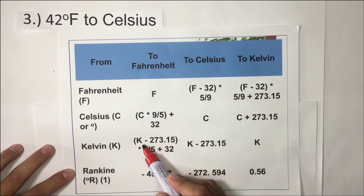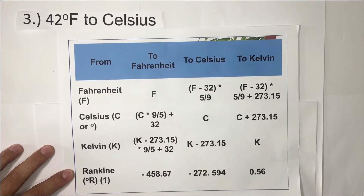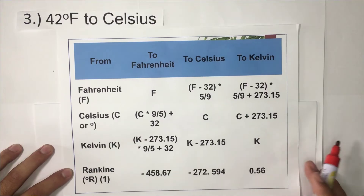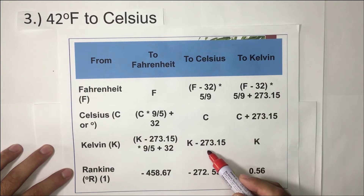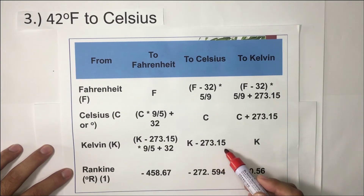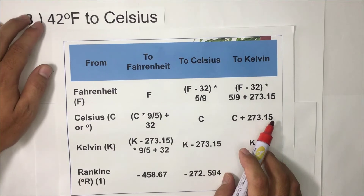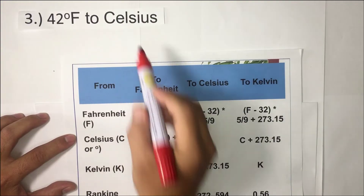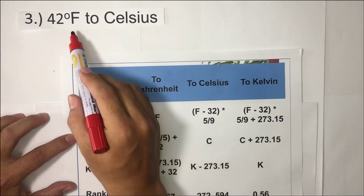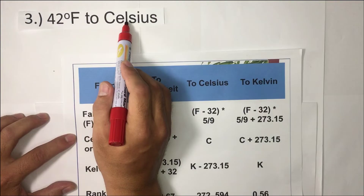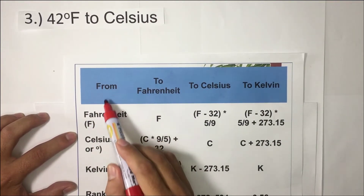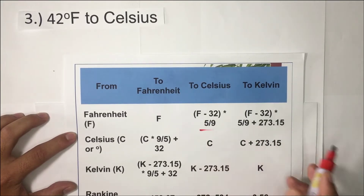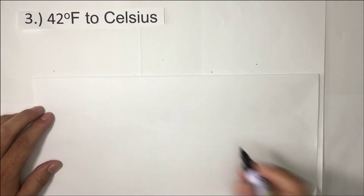For Kelvin to Fahrenheit, use: (K − 273.15) × (9/5) + 32. For Kelvin to Celsius, simply subtract 273.15. Going back to our value: 42 degrees Fahrenheit to Celsius. We need to find the formula for Fahrenheit to Celsius.